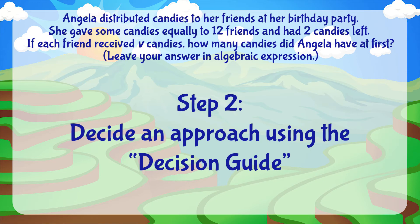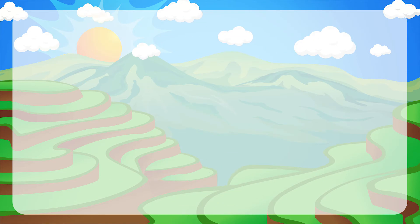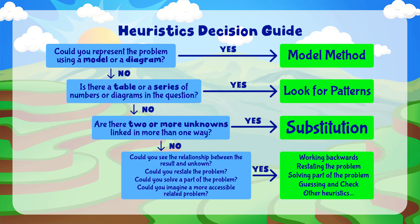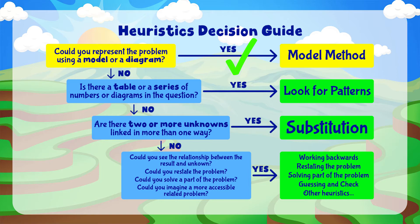Step No. 2: Decide an Approach Using Our Decision Guide Heuristics. Could you represent the problem using a model or a diagram? If yes, then you can use the model method.